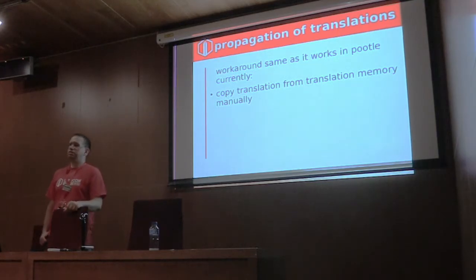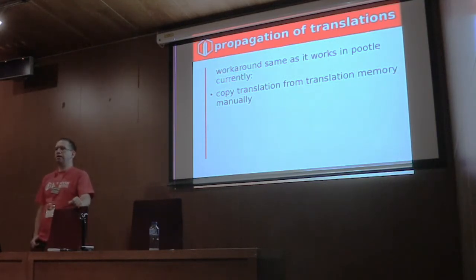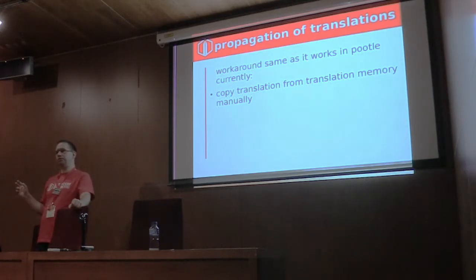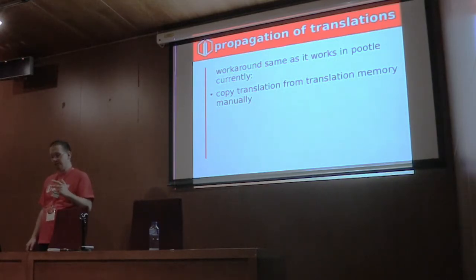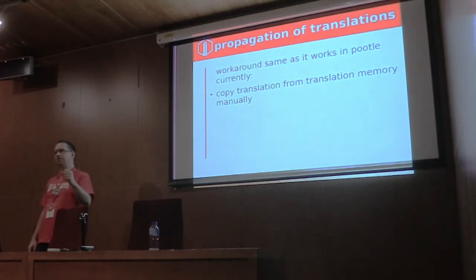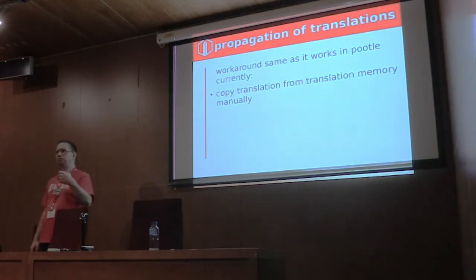One feature Weblate has is propagation of translations within a project to different branches. Right now, when you start translating and you have the stable branch, the still branch, the fresh branch, and the master branch — that's three sets of strings to translate. In Pootle, you would translate the master, then go to the 6.3 project, find the string, copy from translation memory, and do the same for the 6.2 branch.